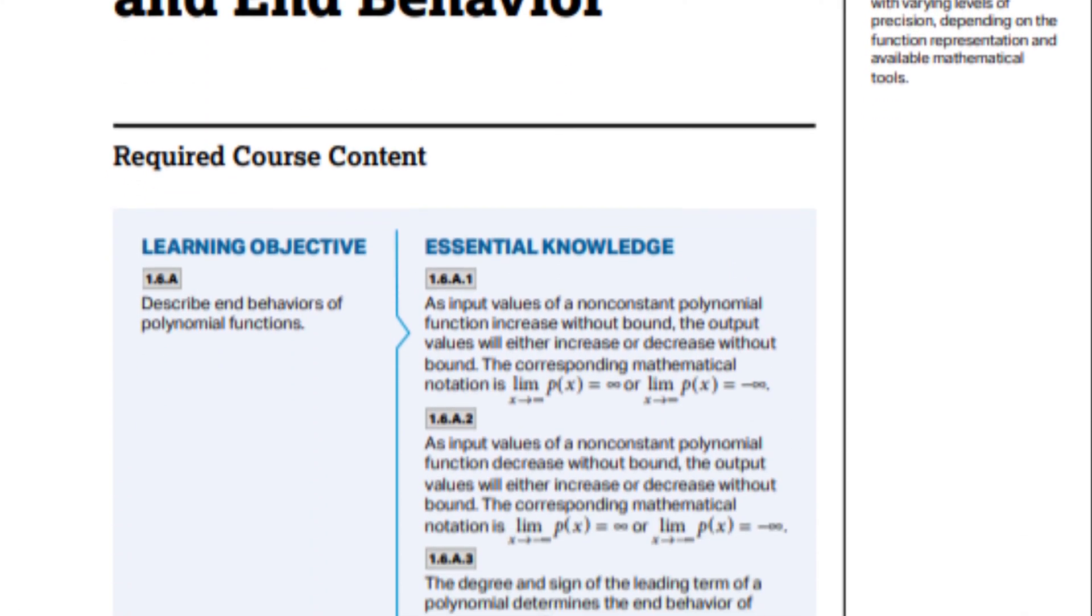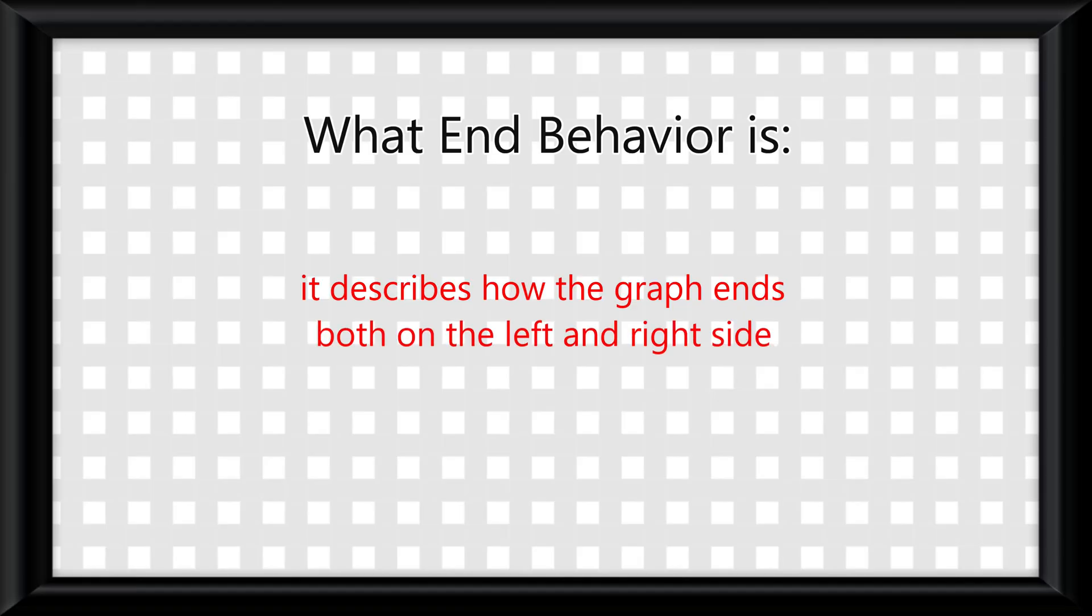First the notation, then how to find them. So let's start with talking about what end behavior is. End behavior is exactly what it sounds like. It describes how the graph ends on both the left and right side.